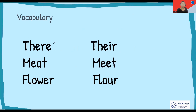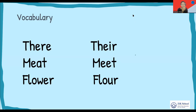Let's have a look at three more pairs of homophones. The first one is 'there' and 'their' — the spellings are different and the meanings differ. 'There' refers to a place, and 'their' is a pronoun. 'Meat' is something which is edible, and 'meet' is an action meaning to see someone. 'Flower' is something colorful you see in the garden, and 'flour' is a powdery white substance used in the kitchen to make bread.